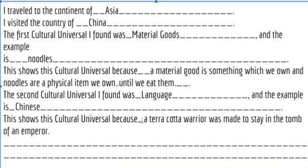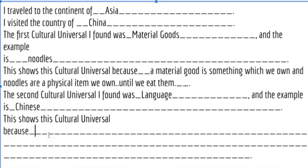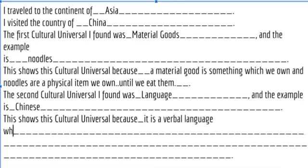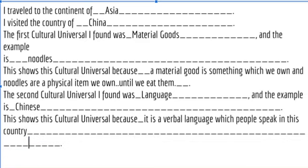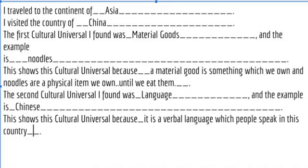The example for language is Chinese. I know there are a lot of different dialects and I could be more specific, but I'm speaking off the top of my head for demonstration purposes. This shows the culture universal because it is a verbal language which people speak in this country. Then get rid of the extra text, and that's what you'd be filling in on your digital travel notebook.